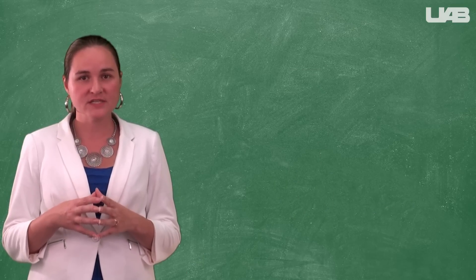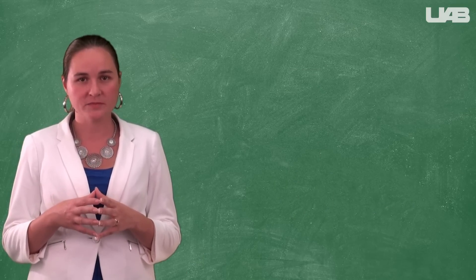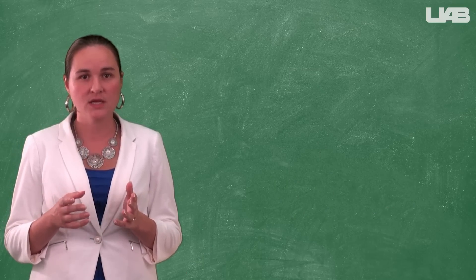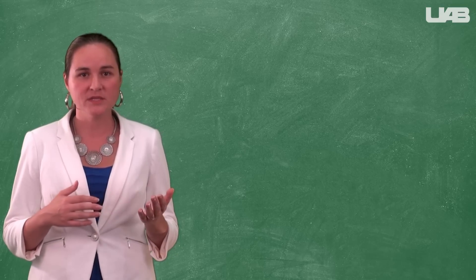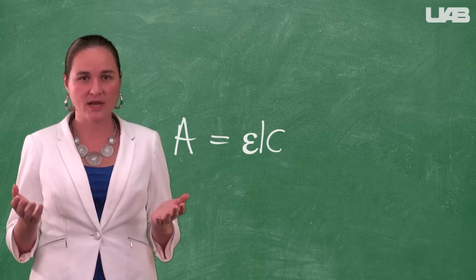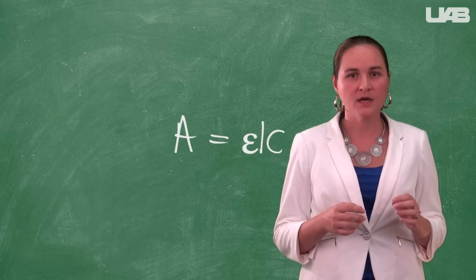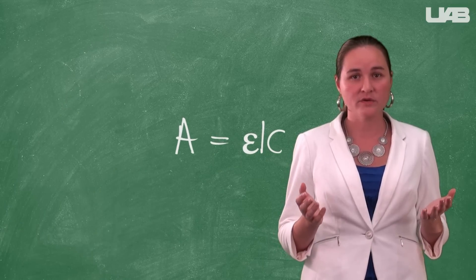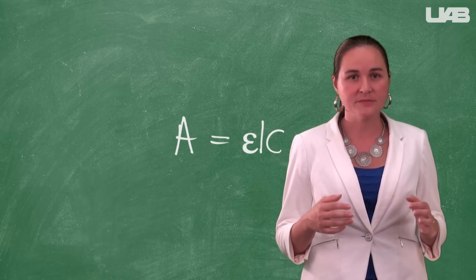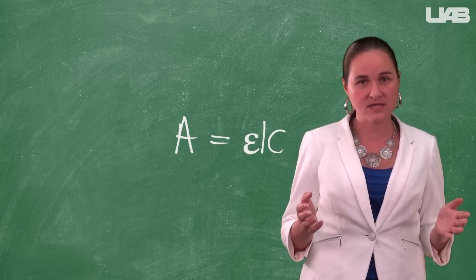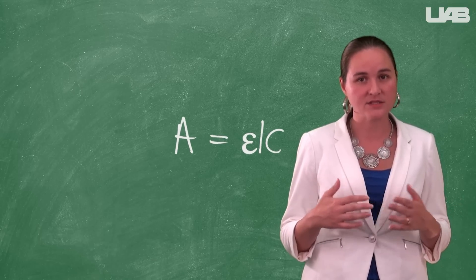You will use the UV-Vis spectrophotometer to collect absorbance data from a series of dilutions. The relationship between absorbance and concentration is described by the Beer-Lambert law. Absorbance equals epsilon, or the extinction coefficient, times L, the path length of the cell, times C, the concentration.